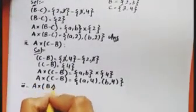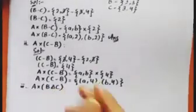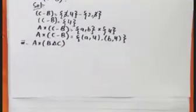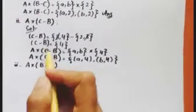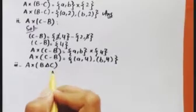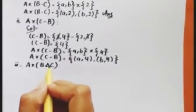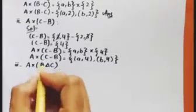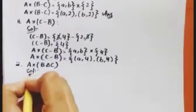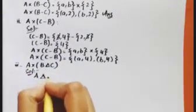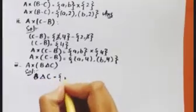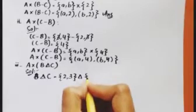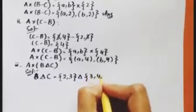Next we have A cross (B symmetric difference C). We have to find the Cartesian product. First, solve the bracket: B symmetric difference C. B value is {2, 3} and C value is {3, 4}. In the symmetric difference, we leave out the members that are the same in both sets.